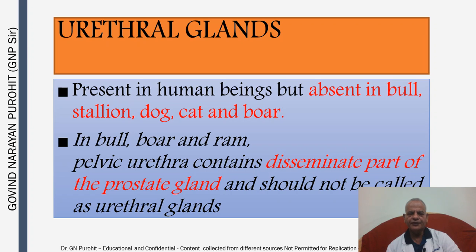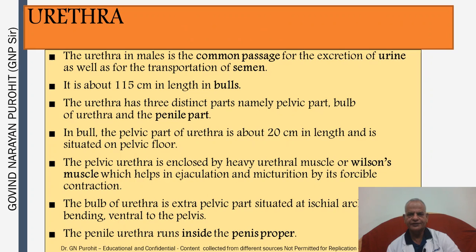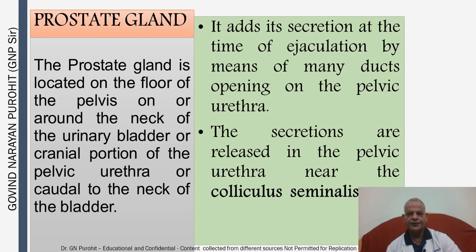In the bull, boar, and ram, the pelvic urethra contains a disseminate part of the prostate glands and should not be called urethral glands. The urethra in males is the common passage for the excretion of urine as well as for transportation of semen. In bulls it is about 115 cm in length, with three distinct parts: the pelvic part, the bulb of the urethra, and the penile part. The pelvic part is about 20 cm in length and is situated on the pelvic floor. The pelvic urethra is enclosed by the urethral muscle — also known as the Wilson muscle — which helps in ejaculation and micturition by its forcible contraction. The bulb of the urethra is extra-pelvic, situated on the ischiatic arch and bending ventral to the pelvis. The penile urethra runs inside the penis proper.